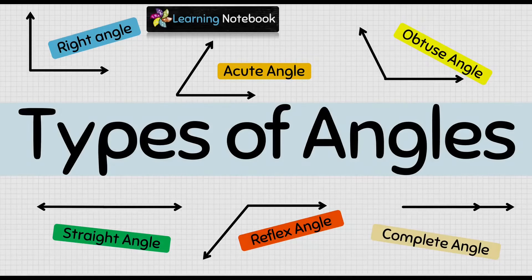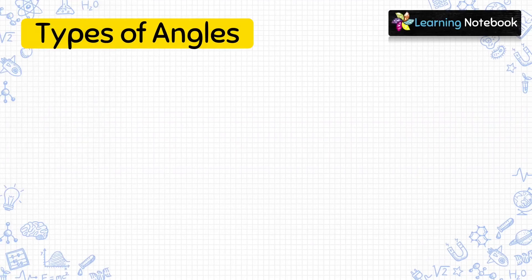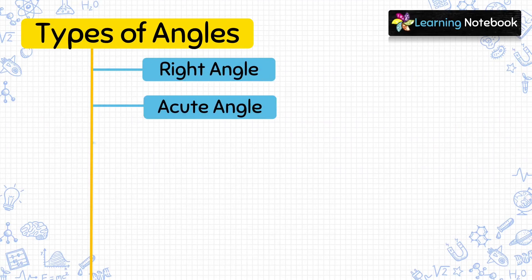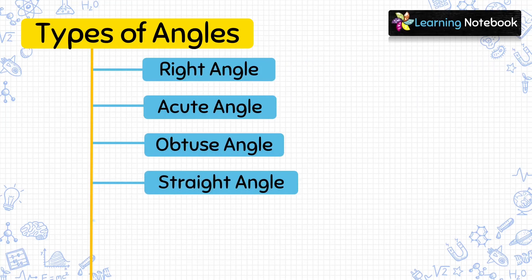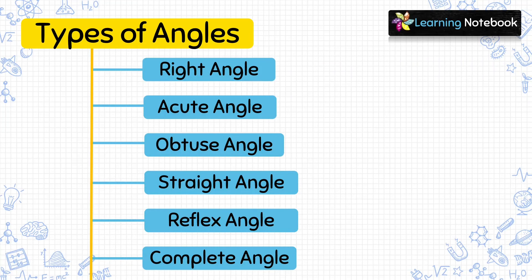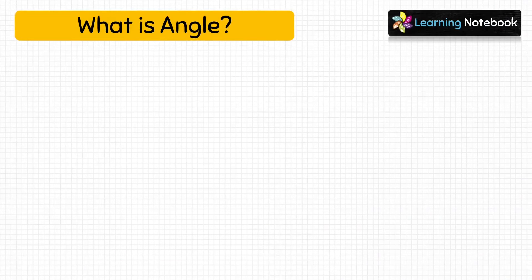Hello students, welcome to our channel Learning Notebook. In today's video we are going to learn types of angles. In this chapter we will learn six types of angles: right angle, acute angle, obtuse angle, straight angle, reflex angle, and complete angle. First, let's understand what is an angle.